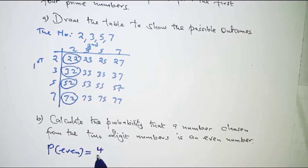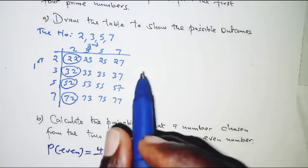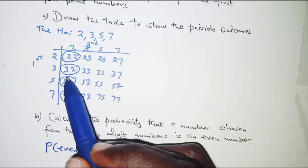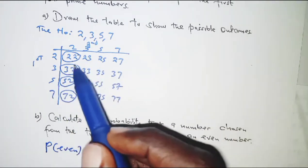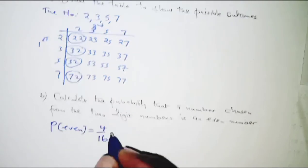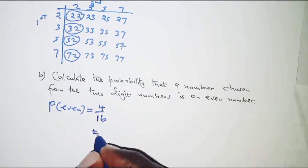And the total possible outcomes are 16 in total. So we have 4 over 16, and that is a quarter.